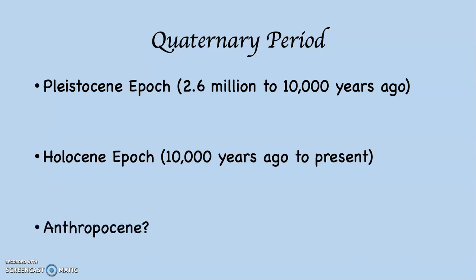Some people argue that we are now entering into the Anthropocene. 'Anthro,' of course, has to do with humans, because human beings are altering everything — the atmosphere, the oceans, the rivers, the lakes, the land, the soil, the vegetation. We're moving vegetation into places it was never at before, moving animals into places they were never at before. So it's not impossible that we're in this new epoch called the Anthropocene, but this is more of an intellectual scientific discussion than it is reality at this point.